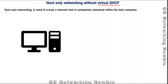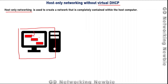We know that host-only networking is used to create a network that is completely contained within the host computer. On our host machine we can have different virtual machines — for example Kali Linux, Windows 10, and a Windows Server machine. We want to create a virtual network of those virtual machines on our host, and this setup is useful when we want to have multiple computers on a single computer.